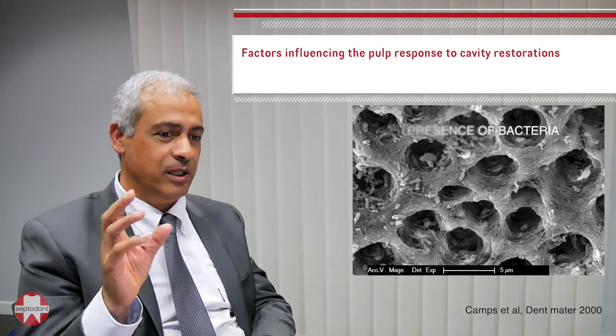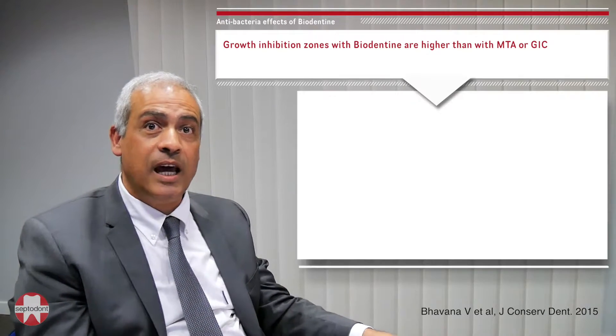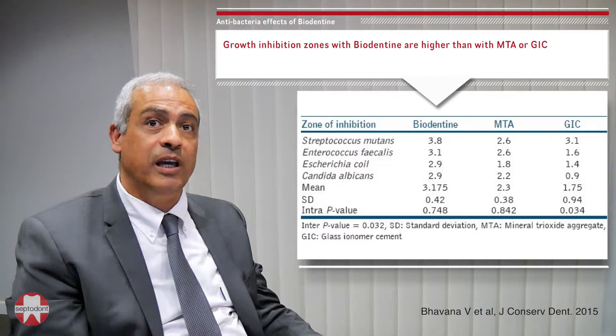If you do not eliminate bacteria, you will get inflammation, and with inflammation you will get pain — this is why the patient will come to complain. The choice of material is very important because it should not allow bacterial penetration into the pulp. Biodentine has been evaluated on different bacterial species and shown to have a bacterial growth inhibitory effect.